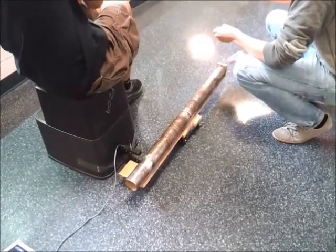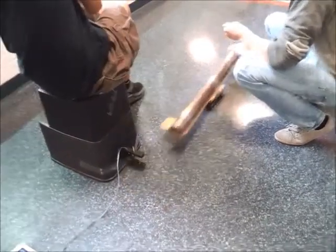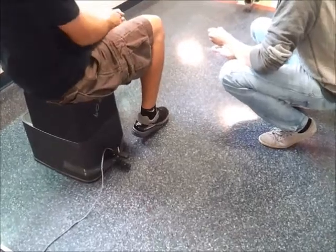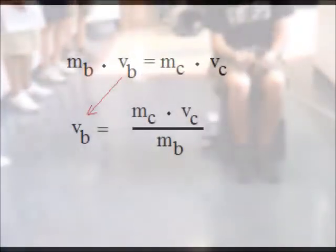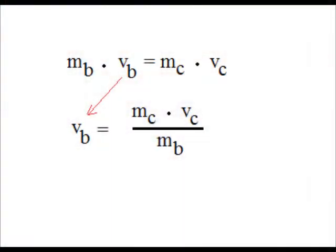Using the width of the card and the time from the timer, they calculated the velocity of the cannon's recoil. This is the momentum calculation that was used to calculate the velocity of the tennis ball as it was fired from the cannon.